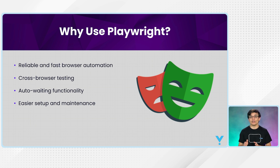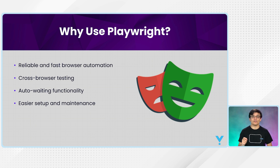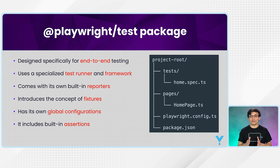Playwright has all the advantages over other automation tools, which is why companies are slowly switching from Cypress or Selenium to Playwright. In the future, Playwright could probably be the number one automation tool. Companies will need someone who knows both tools, and hopefully you will be the person who can lead your team in making that switch.